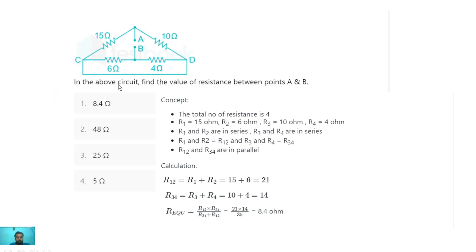The very first one: in the above circuit, find the value of resistance between point A and B. Here you can see the circuit diagram with point A, point B, point C, and point D. We have to calculate the equivalent resistance between point A and B. Point C and point D are short circuited here.